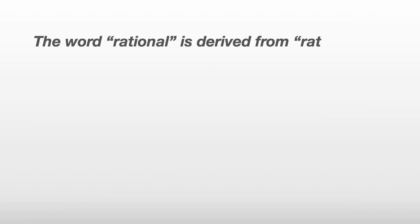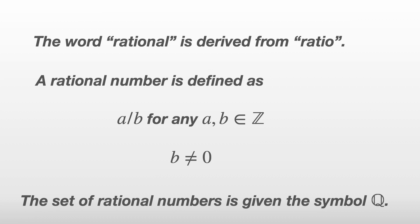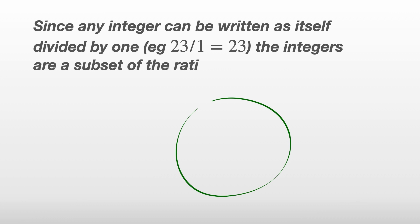The word rational is derived from ratio and a rational number is defined as any a divided by b where a and b are integers. And b isn't zero since dividing any number by zero isn't really allowed. The set of rational numbers is given the symbol Q after the word quotient. Since any integer can be written as itself divided by one, for example, 23 over one is just 23, the integers are a subset of the rational numbers.